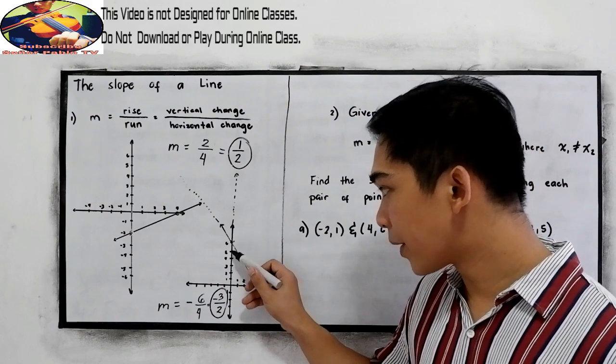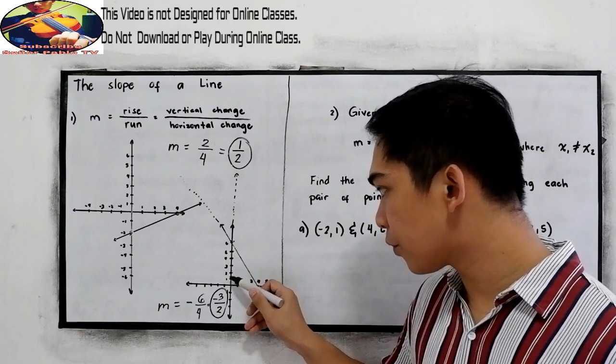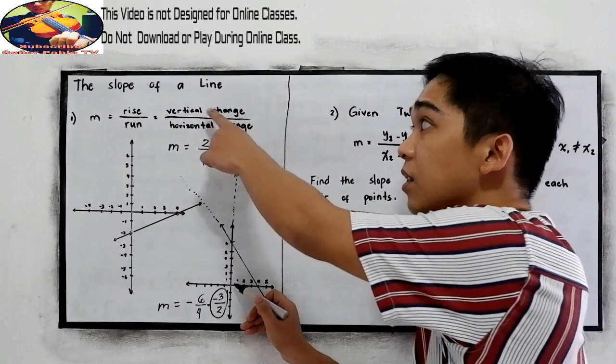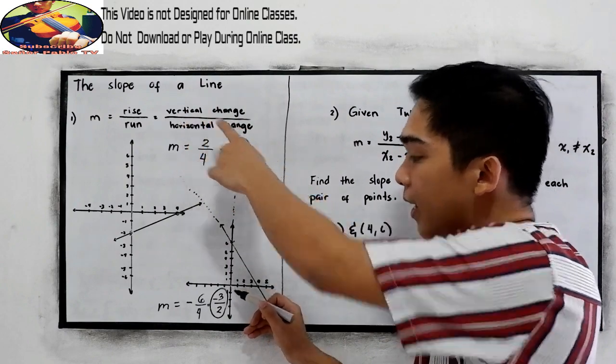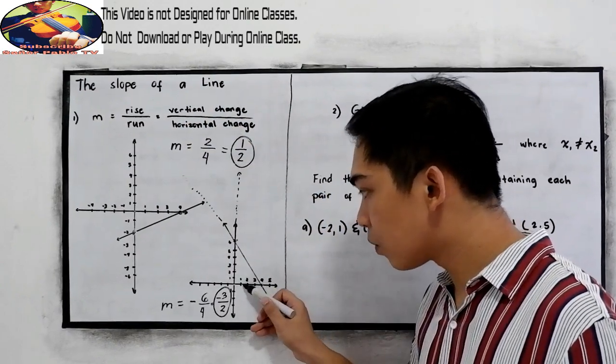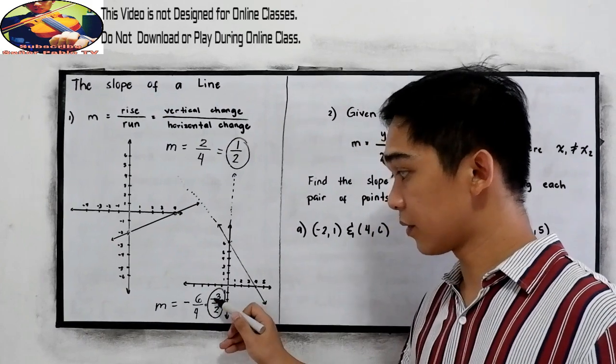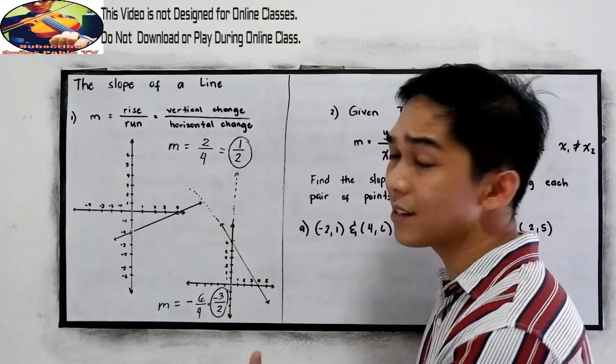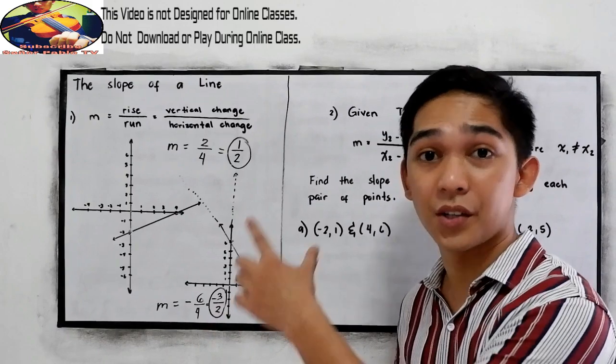Again, going down, 1, 2, 3, 4, 5, 6. Change in our vertical line and 1, 2, 3, 4, negative 3 over 2. So that is the rise over run.